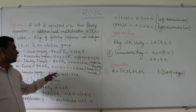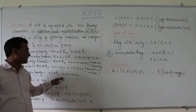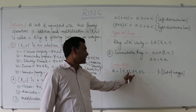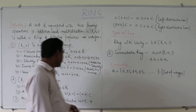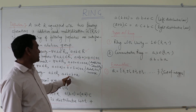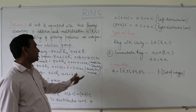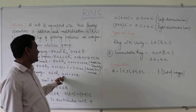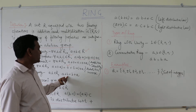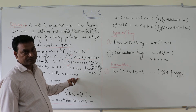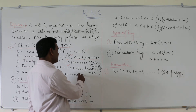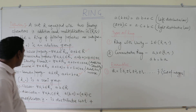The fifth property is the commutative property. If a, b belong to R, then a + b = b + a. We can take any two elements — for example, 1 and 2 — then 1 + 2 = 2 + 1, that is 3 = 3. So this property also holds, meaning (R, +) is an Abelian group.